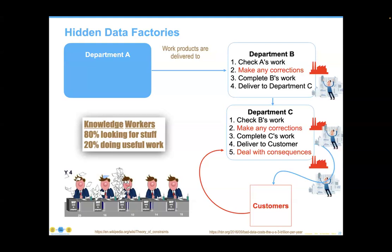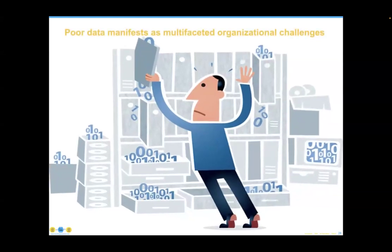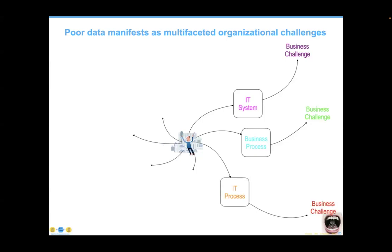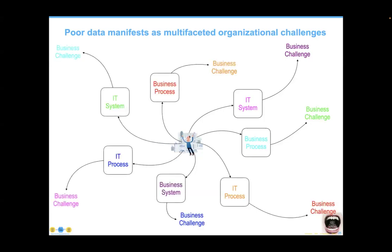This leads to what Tom Redmond calls hidden data factories. When department B gets tired of correcting department A's data work products, it just starts doing it on its own. Department C, having the same downstream effect from department B, also gets tired of correcting department B's pieces. Customers end up with the same kind of results. These hidden data factories exist in all of our organizations, and one of our goals should be to find and eliminate them.